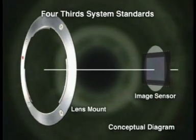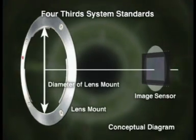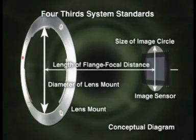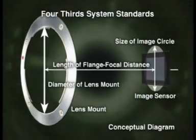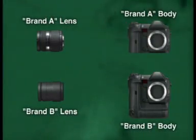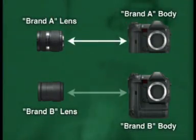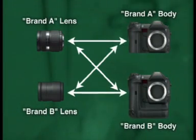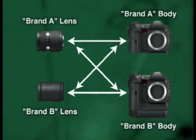The four-thirds system standardizes the diameter of the lens mount, the size of the image circle, the flange focal distance, and more. The four-thirds system is an open standard. This will allow far greater compatibility, meaning that consumers will be able to freely interchange bodies and lenses produced by different manufacturers adopting the four-thirds system.